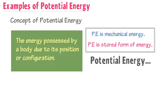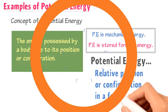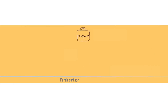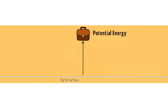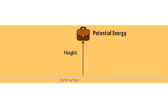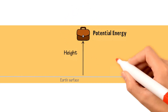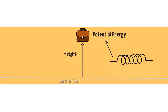If an object possesses Potential Energy, its Potential Energy will be due to its relative position or relative configuration in a force field. For example, if you raise an object from the Earth's surface, then this object above the Earth at a particular height possesses Potential Energy. Another example of Potential Energy is a Compressed Spring, which possesses Potential Energy due to change in position or configuration.